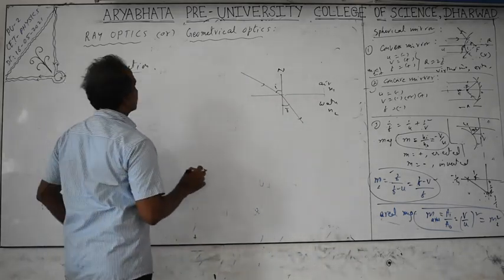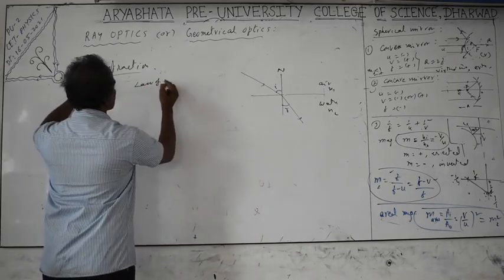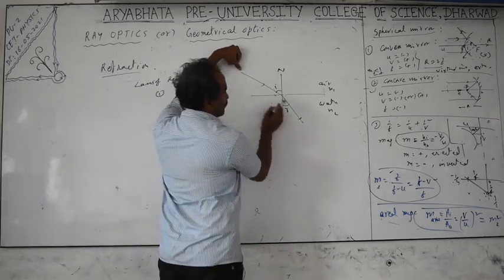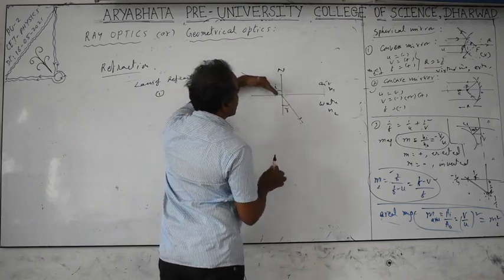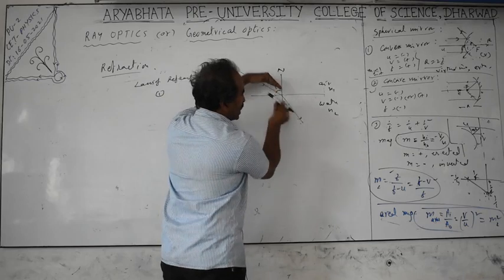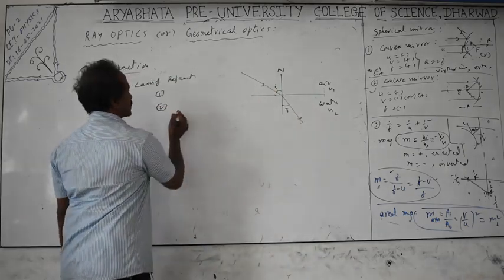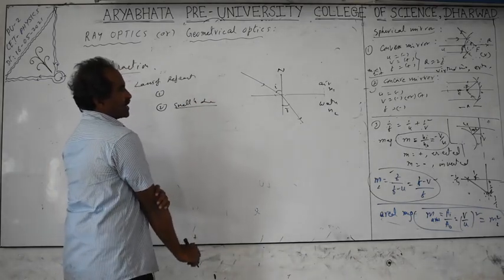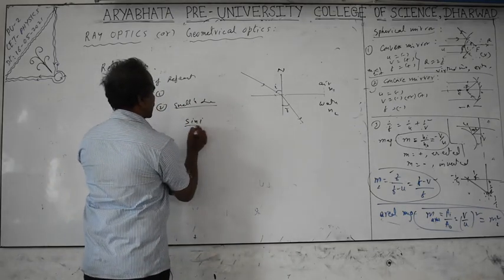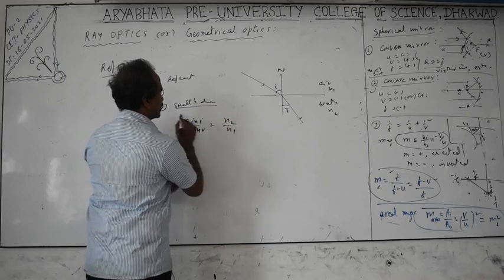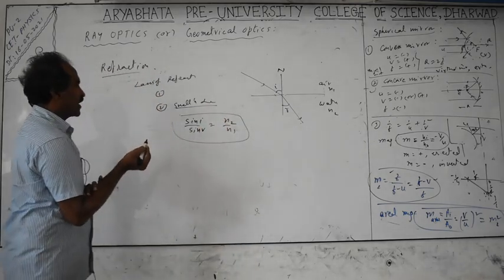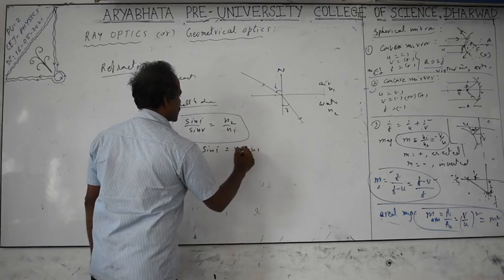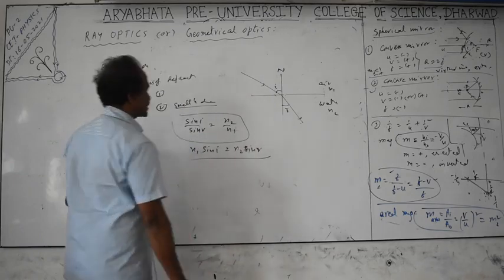The laws of refraction: first law — the incident ray, refracted ray, and normal all lie in the same plane. Second law — Snell's law: sin i / sin r = n2 / n1, which can also be written as n1 sin i = n2 sin r. Light traveling from a rarer to a denser medium bends toward the normal (r is less than i). The angle of deviation is the angle between the incident and refracted rays: d = i minus r.